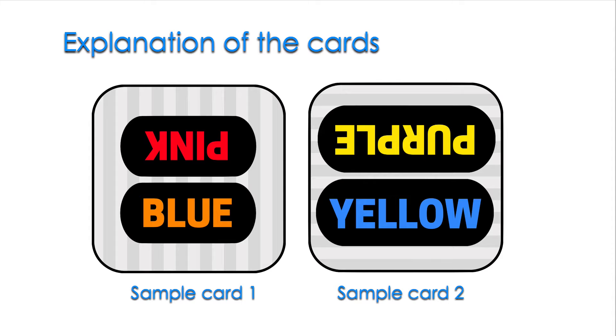When the lines are vertical and go top to bottom, that tells you to focus on the color of the word.